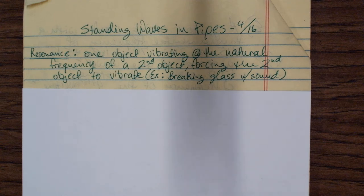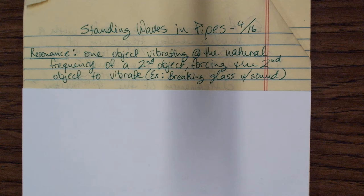We're going to do a lab today called the Resonance Lab. Resonance is when you have one object that vibrates at the natural frequency of a second object, forcing the second object to vibrate. For example, you can sing at a glass and cause it to break by matching its frequency — it resonates at the natural frequency, vibrates too fast, and breaks. Don't do that without goggles on, but it's interesting.